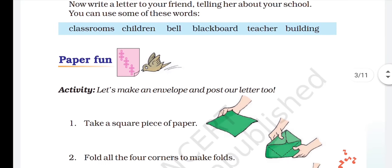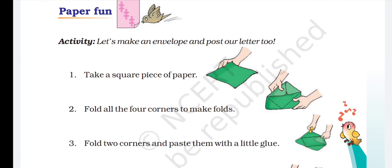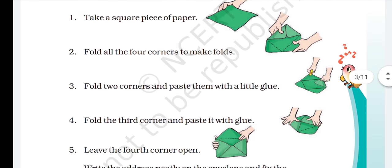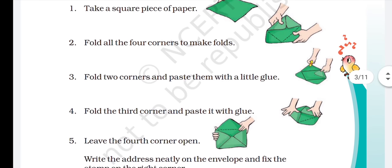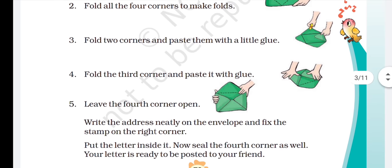Next, paper fun. It is an activity. Let's make an envelope and post our letter too. Here are 5 steps given. Take a square piece of paper. Fold all the 4 corners to make folds. Fold 2 corners and paste them with a little glue. Fold the 3rd corner and paste it with glue. Leave the 4th corner open. Now, you have to write the address neatly on the envelope and fix the stamp on the right corner. Then, put the letter inside it. Now, seal the 4th corner as well. Your letter is ready to be posted to your friend. Children, do this activity with your parents.